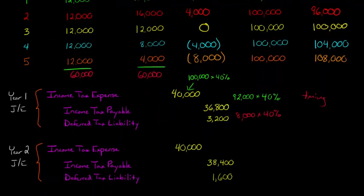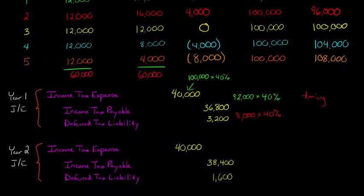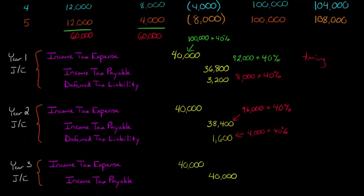In year two, we again debit income tax expense at $100,000 times 40% = $40,000. Income tax payable is different: $96,000 times 40% = $38,400. The deferred tax liability plug is $1,600, which you can also calculate directly as $4,000 times 40%. That $1,600 is a liability that appears on the balance sheet.